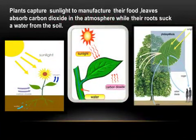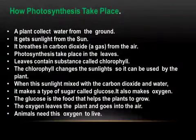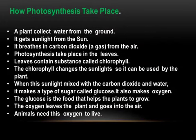Plants capture sunlight to manufacture their food. Leaves absorb carbon dioxide in the atmosphere while their roots suck up water from the soil. How photosynthesis takes place: a plant collects water from the ground, it gets sunlight from the sun, it breathes in carbon dioxide from the air. Photosynthesis takes place in the leaves.